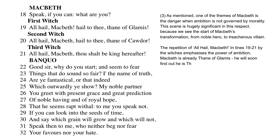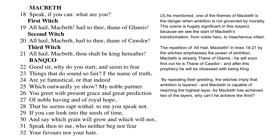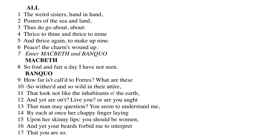The repetition of 'All hail, Macbeth' in lines 19 to 21 by the witches emphasizes the power of ambition. Macbeth is already Thane of Glamis and will soon find out he is Thane of Cawdor, and after this prophecy he will become obsessed with the idea of being King. By repeating their greeting, the witches imply that ambition is layered and Macbeth is capable of reaching the highest layer — from his point of view, having achieved two of the layers, why can't he achieve the third?